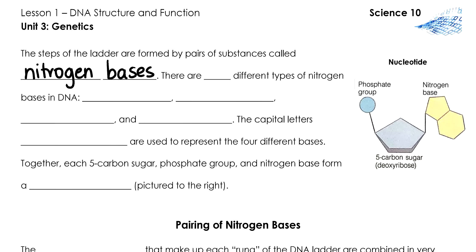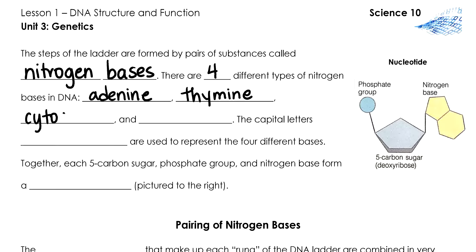There are four types of nitrogen bases: adenine, thymine, cytosine, and guanine. We usually symbolize each of these four bases using their capital letters — A for adenine, T for thymine, C for cytosine, and G for guanine.